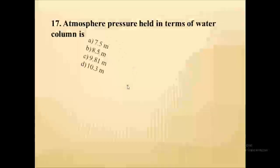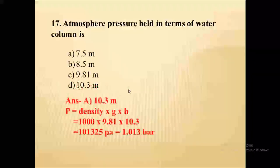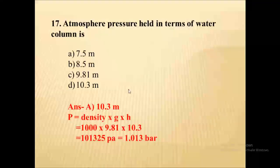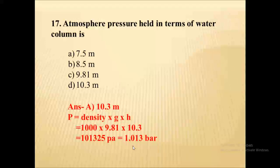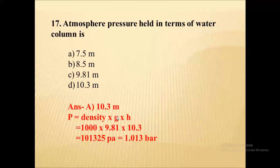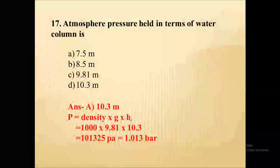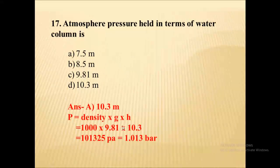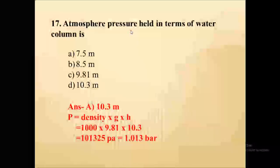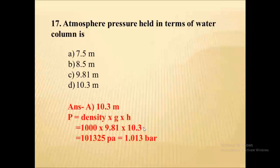Atmospheric pressure in terms of water column is 10.3 meters. One atmosphere is 1.013 bar. Pressure equals ρgh; density of water is 1000, g is 9.81, and h is 10.3. Solving gives 101325 Pascal, which equals 1.013 bar. So for 1 atmospheric pressure, the water column height is 10.3 meters.